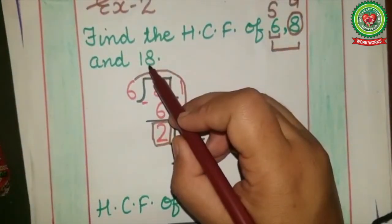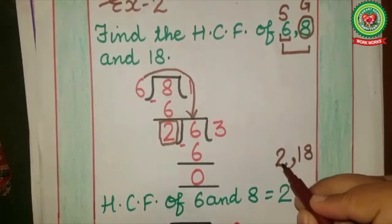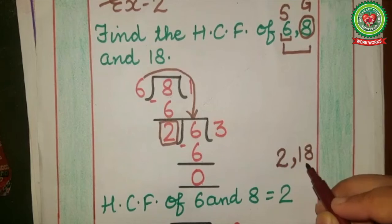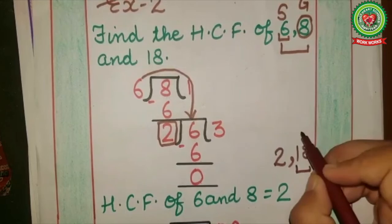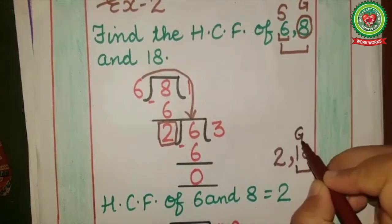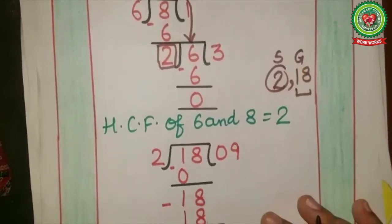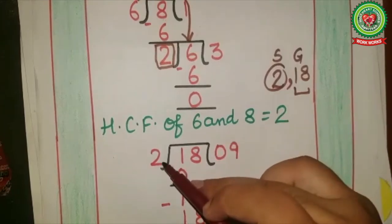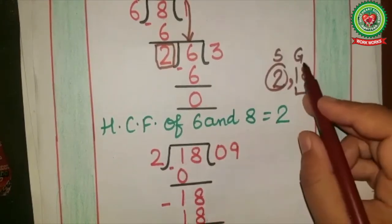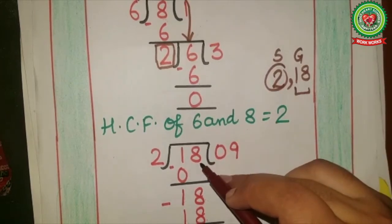I got the answer for HCF of 6 and 8, which is 2. Now 18 is still left. We will divide 18 by 2. Comparing 2 and 18, 18 is greater and 2 is smaller. So the smaller number, 2, will become the divisor and the greater number, 18, will become the dividend.